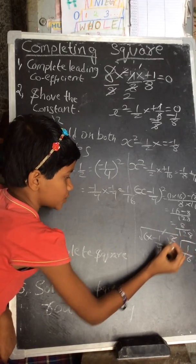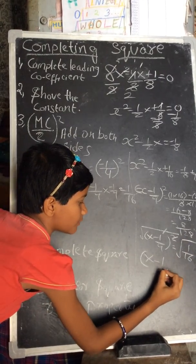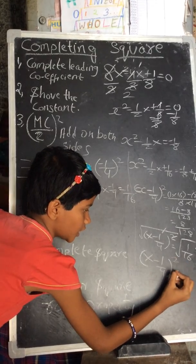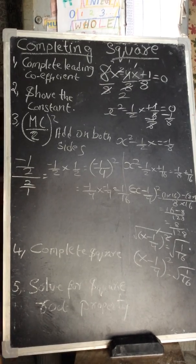The square and square root will get cancelled. So x minus 1 by 4 equals the square root of 1 by 16. Thank you.